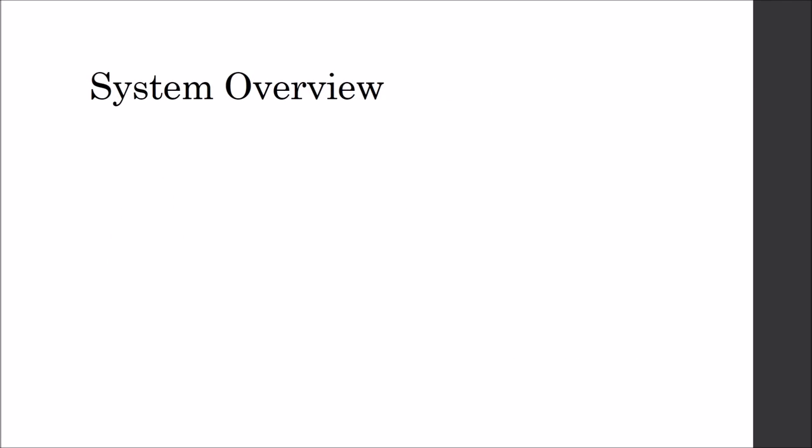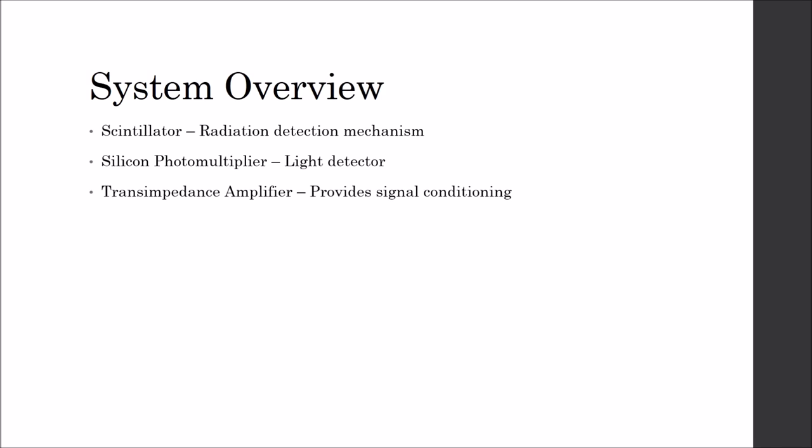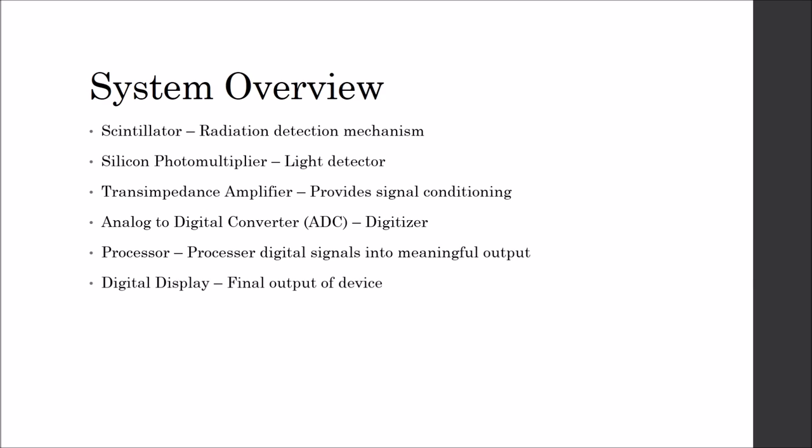Now let's look at the system overview for the actual device. Components will include a scintillator, the silicon photo multiplier, transimpedance amplifier, analog to digital converter, processor, digital display, cooling system, and a housing module to contain everything.